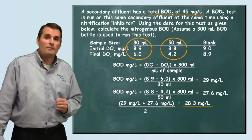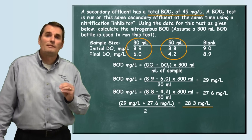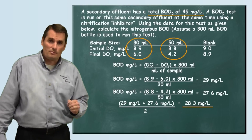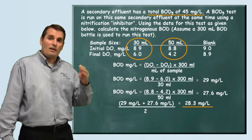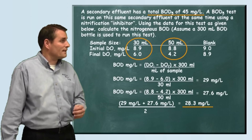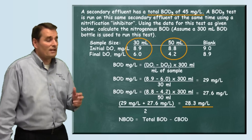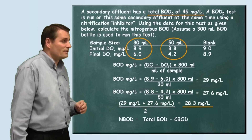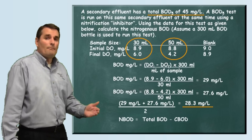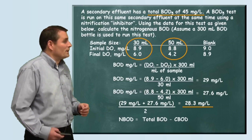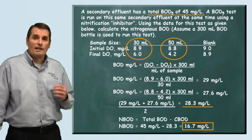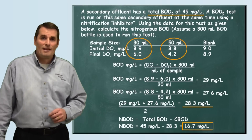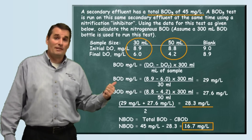This 28.3 milligrams per liter represents our carbonaceous BOD. They told us that the total BOD was 45 milligrams per liter. So if we take our carbonaceous BOD of 28.3 and subtract it from 45, we'll have our nitrogenous BOD. The formula is: NBOD (nitrogenous BOD) equals total BOD minus carbonaceous BOD. When we do that, we see that our nitrogenous BOD is 16.7 milligrams per liter. And that is how this problem is solved.